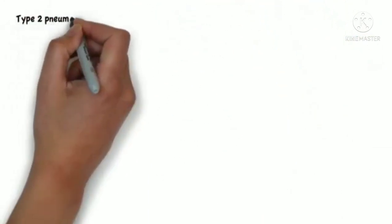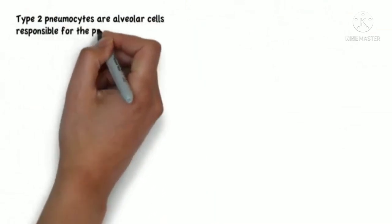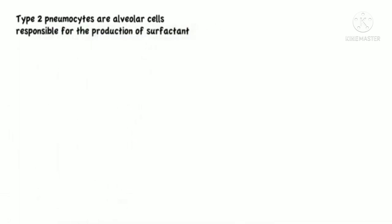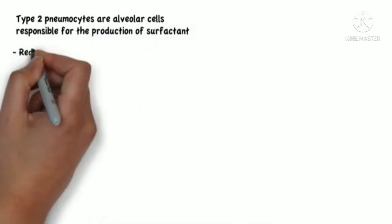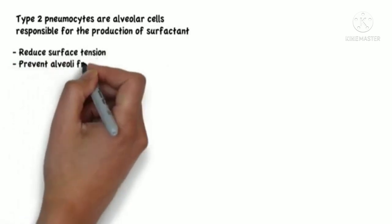Type 2 pneumocytes are alveolar cells responsible for the production of surfactant, which is the substance responsible for reducing surface tension and preventing the alveoli from collapsing.